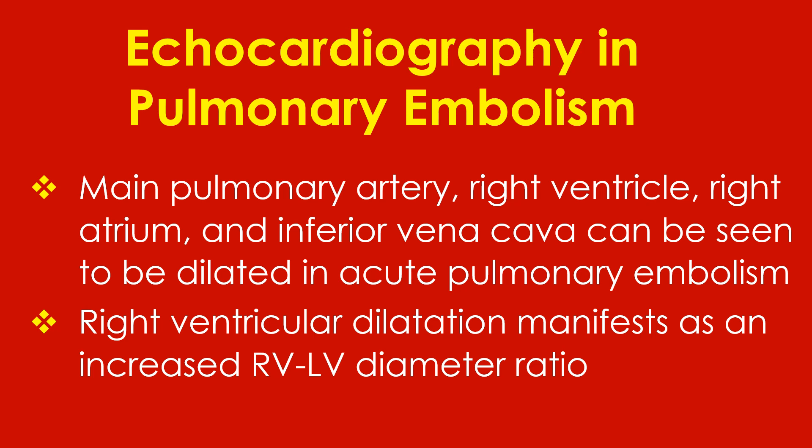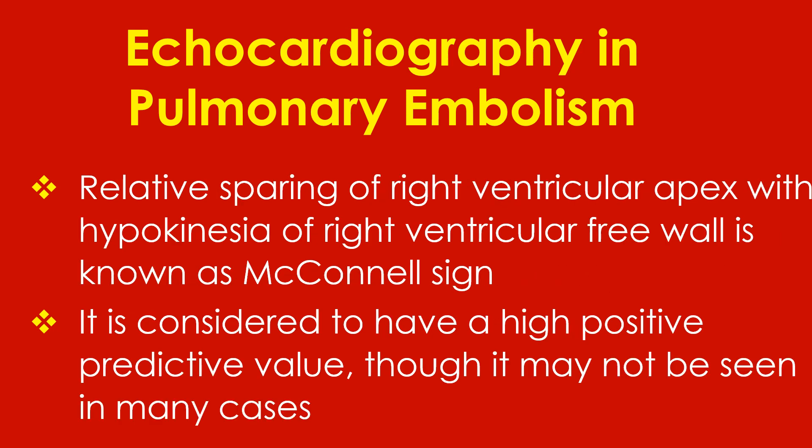Right ventricular dilatation manifests as an increased RV-LV diameter ratio. Relative sparing of the right ventricular apex with hypokinesia of the right ventricular free wall is known as McConnell's sign. It is considered to have a high positive predictive value, though it may not be seen in many cases.